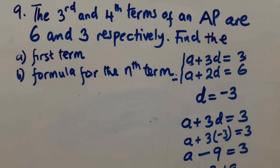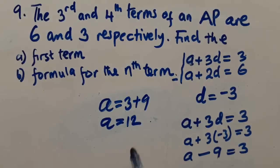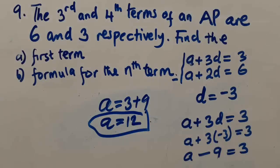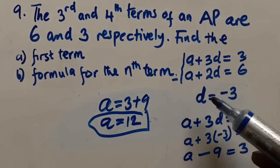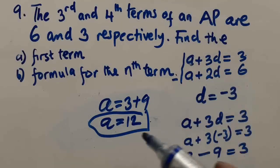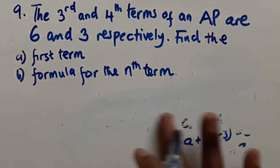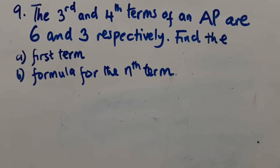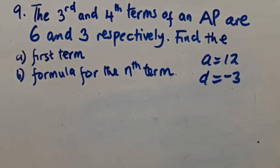Therefore a = 3 + 9, so a = 12. The first term is 12. The common difference, although not asked, is -3.